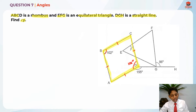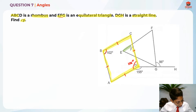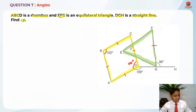And EFG is an equilateral triangle. In an equilateral triangle, all sides are the same and all angles are 60 degrees.